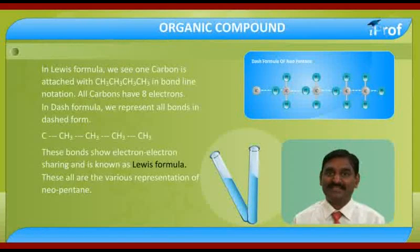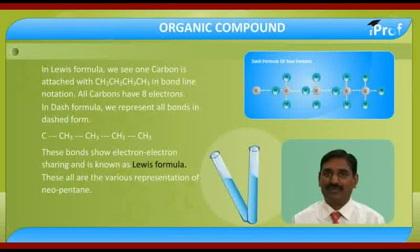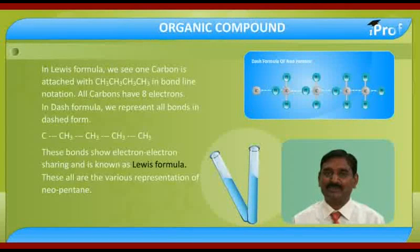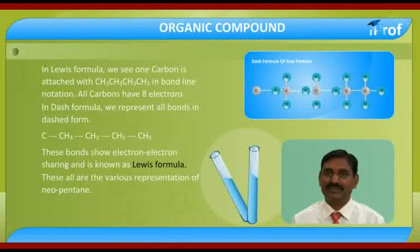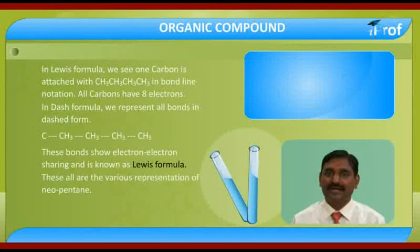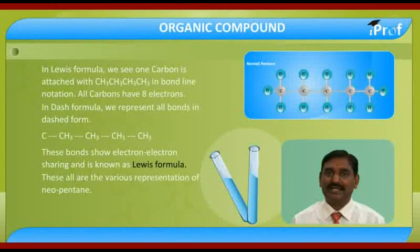This is the condensed formula. In condensed formula, we do not represent any dash — no dash — we represent only the molecule in a condensed way. In bond-line formula, the bond-line formula of neopentane is shown as a cross. When we add carbon notation to the mid-carbon, four carbons are attached, all four carbons attached with three hydrogens. When these three hydrogens are represented by dashes, this is known as dash formula. And when we represent these dashes by electron sharing, this is known as Lewis formula.